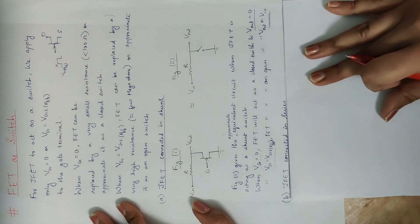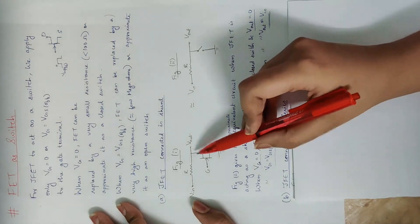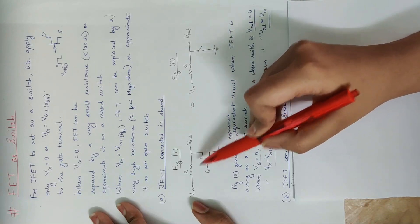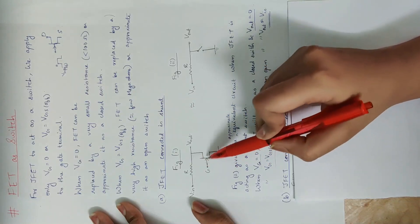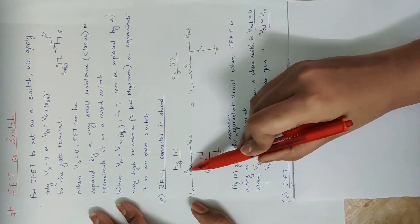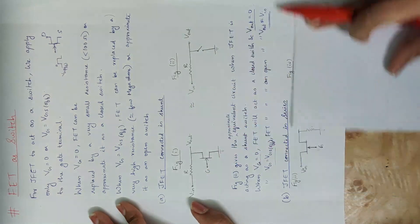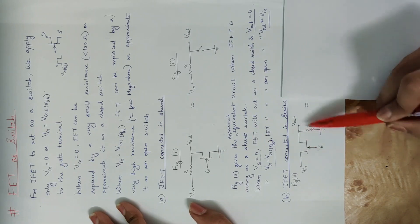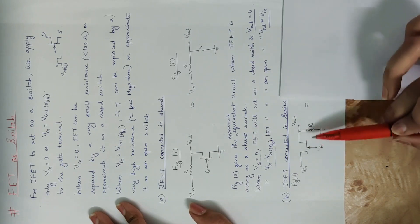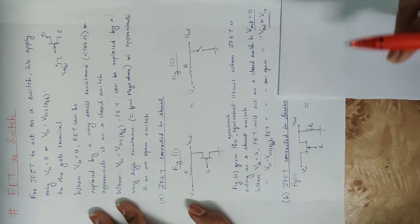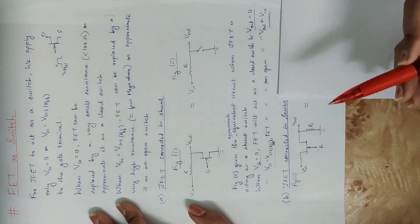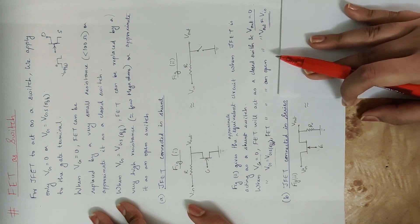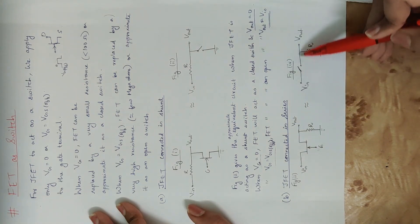Now the second circuit: J-FET connected in series. FET comes here with a resistance. The approximate equivalent circuit: J-FET replaced by a switch.